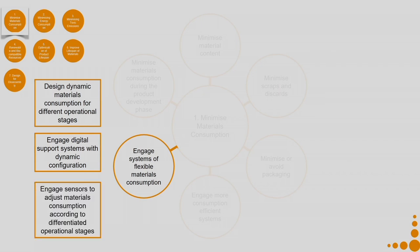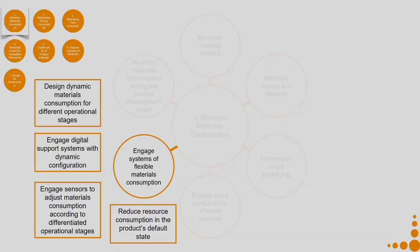Engage sensors to adjust material consumption according to differentiated operational stages — human beings might not be very good at this task, so sensors may work better. For example, you can use sensors in a building so that when people move out of a space, you can lower the air conditioning or switch off the lights. Also reduce resource consumption in the product's default state.